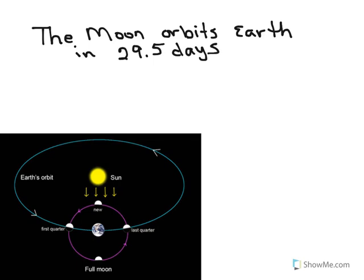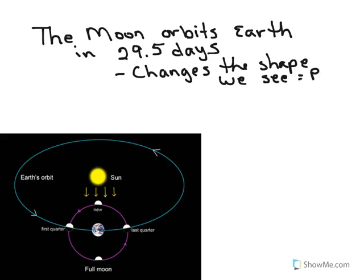And so this does two things. One, that's going to change the shape of the Moon that we see. And so that's what we call Moon phases. And it also changes the stars the Moon is seen in front of.